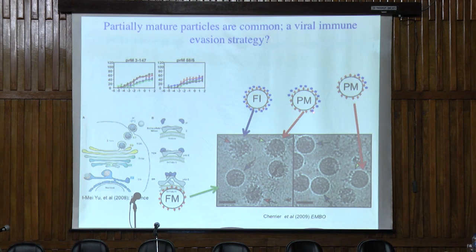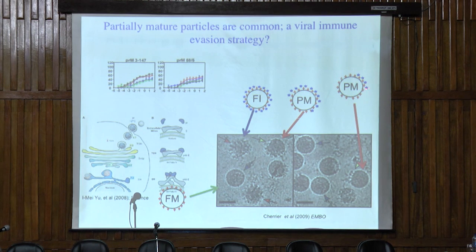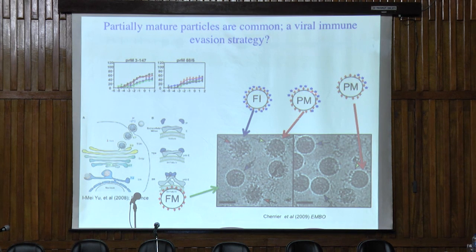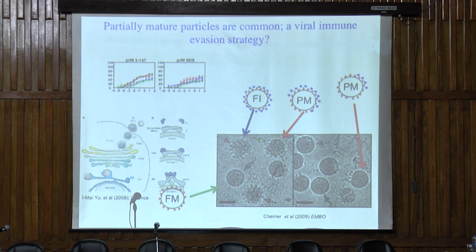The reason these antibodies do not fully neutralize dengue virus is that fully mature virus has no pre-M antigen on it — so it's fully infectious and the antibody cannot bind. Partially mature virus doesn't have enough pre-M to allow the antibody to fully neutralize it, yet the antibody can still bind and drive antibody-dependent enhancement. And virus particles with no pre-M cleavage at all are fully resistant.